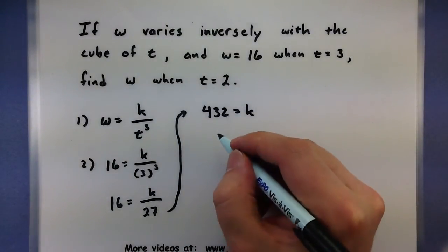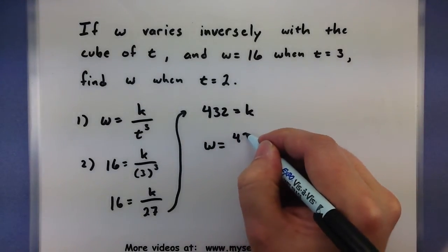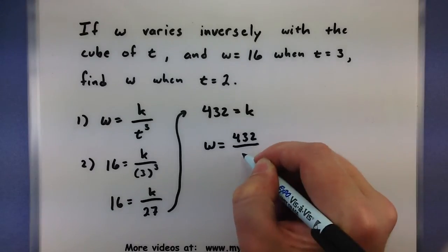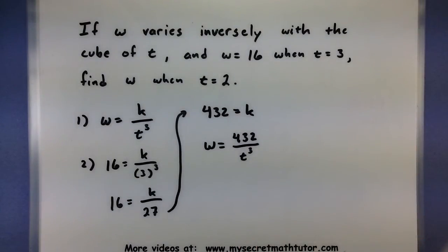So we have the k, we can put this back into our original formula. So w equals 432 all over t cubed. Looking pretty good. Now let's go ahead and finish off the rest of it.